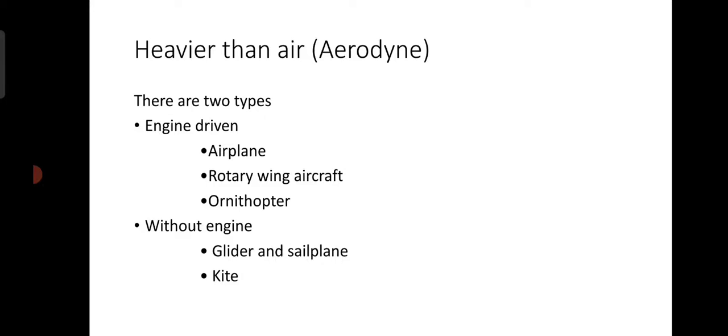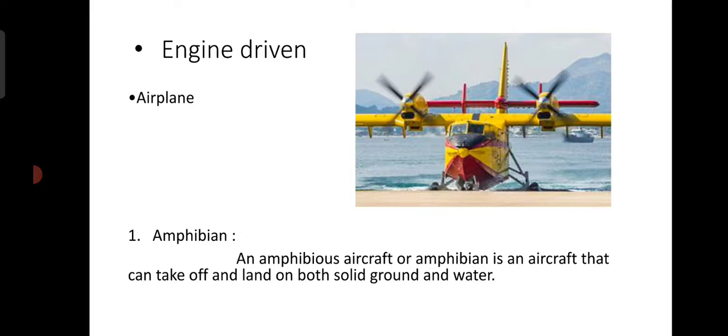Kite balloons were extensively used for military observation during World War One, and similar designs were used for anti-aircraft barriers. These balloons are used for observation by tying a camera to them and flying them. Now we see the second main type: heavier than air, also called aerodyne. There are two main types: engine driven and without engine. In engine driven there are three types: airplane, rotary wing aircraft, and ornithopter. In without engine there are two types: glider and sailplane, and kite.